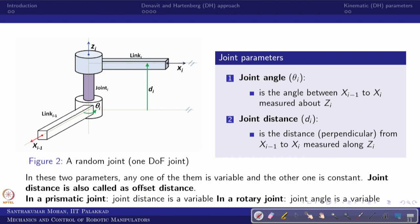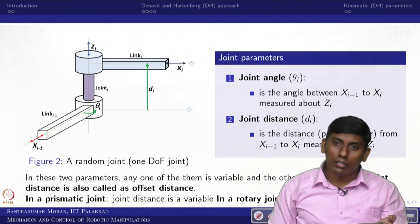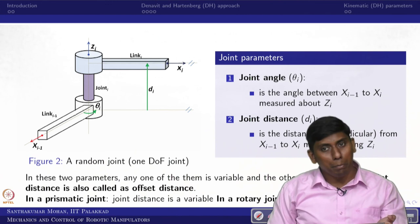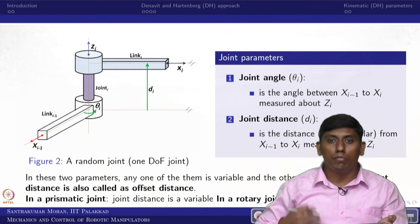To summarize, the Denavit-Hartenberg approach uses only four parameters: link twist (α), link length (a), joint angle (θ), and joint distance (d). We will see further explanation using a PVC pipe model as a manipulator, conclude the DH parameters, and then move to the DH representation — how to express the frame information as a homogeneous transformation matrix. That will be covered in the next lecture.